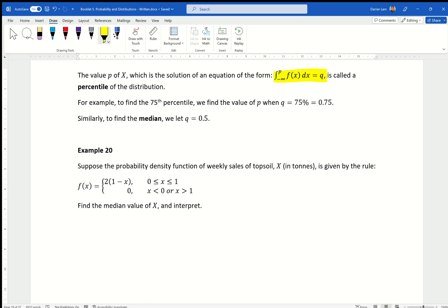For example, to find the 75th percentile, and at this stage I'm assuming we're pretty comfortable with our five number summary, mean, median, mode stuff. And if you don't know that, please refer back to year 7 or 8 mathematics. To find the 75th percentile, we find the value of p when q, or the final answer, is 75%, or 0.75. And of course, on the other hand, if it's a median, we let q equal to 0.5. I'm going to demonstrate what that looks like with a diagram.